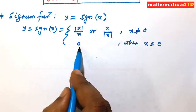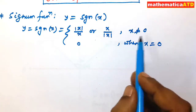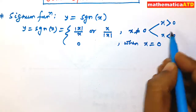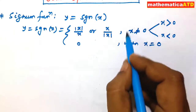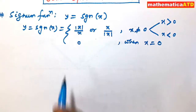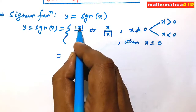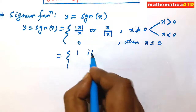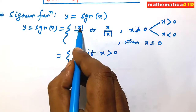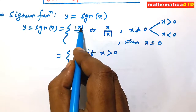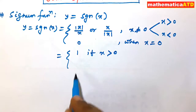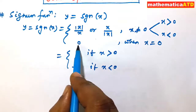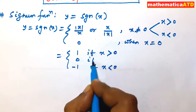sgn(x) = 0 when x = 0. Now, for x ≠ 0, either x > 0 or x < 0. If x > 0, then |x| = +x, so |x|/x = +x/x = 1, so sgn(x) = 1 when x > 0. If x < 0, then |x| = -x, so -x/x = -1, so sgn(x) = -1 when x < 0.